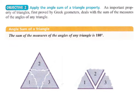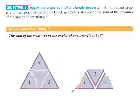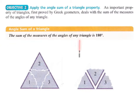Here's an image describing why the angle sum of a triangle property works. It shows that if you take a triangle, rip the three corners apart, and put them back together, they form a straight angle. So the angle sum property states that the sum of the measures of the angles of any triangle is 180 degrees.